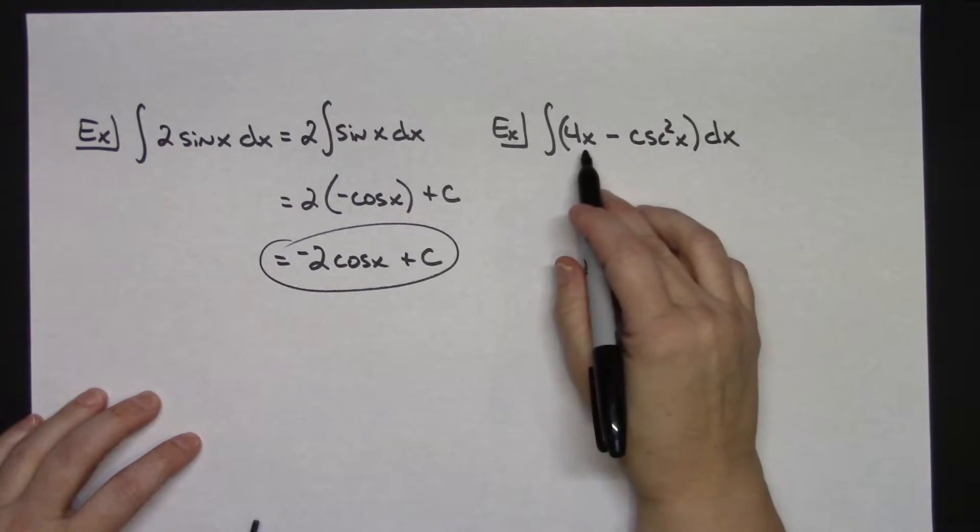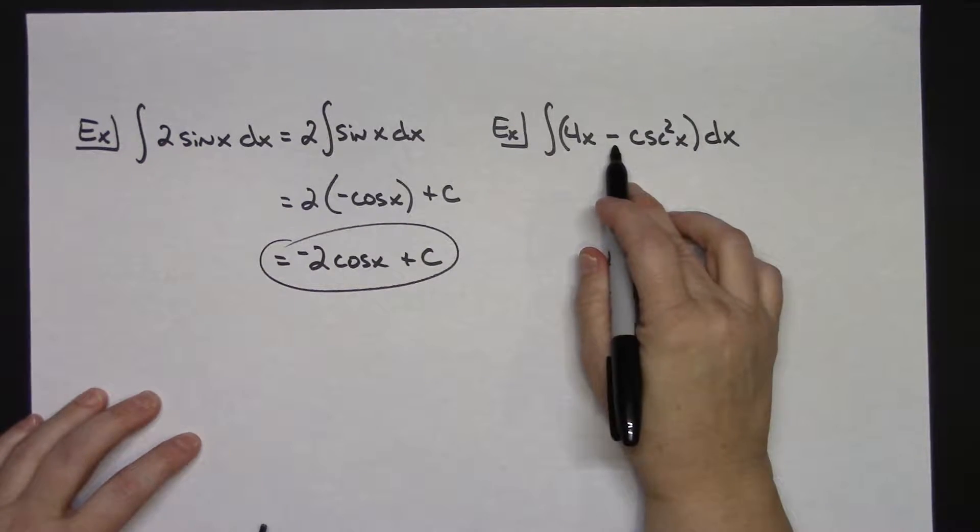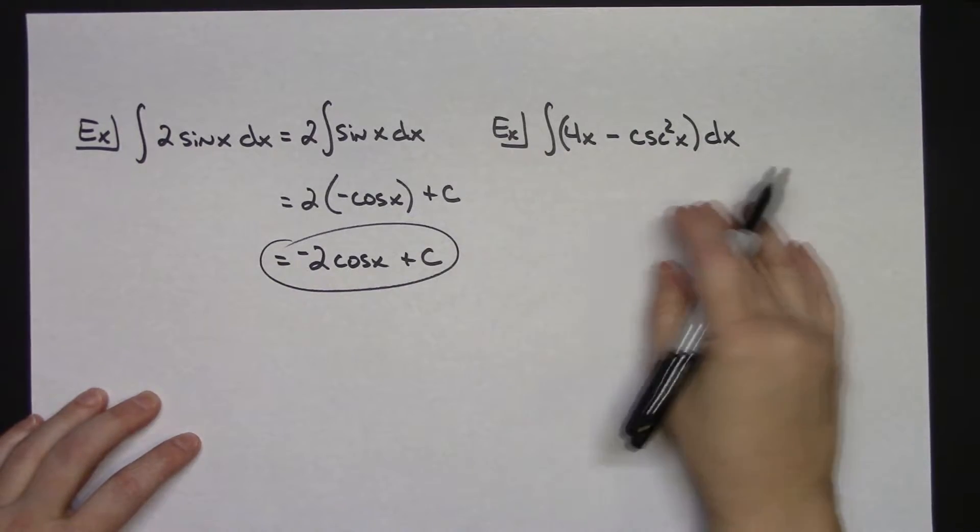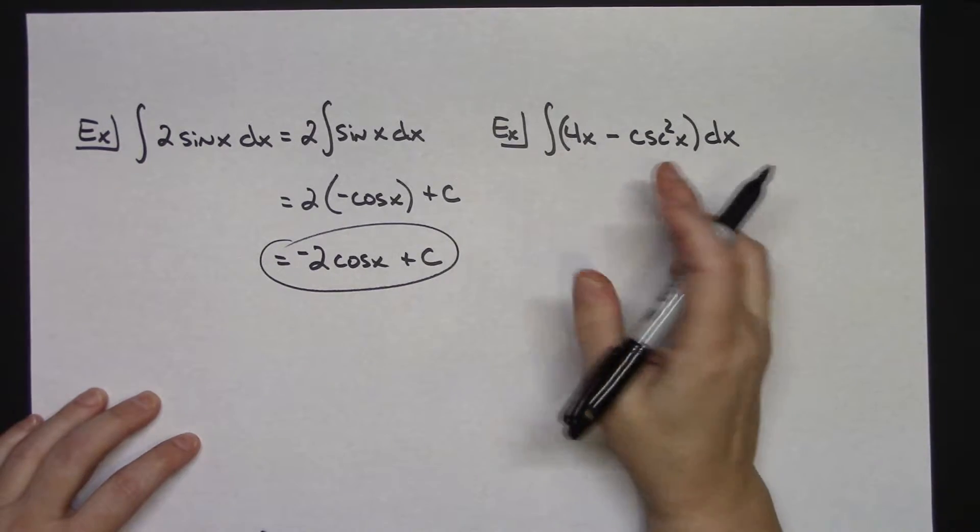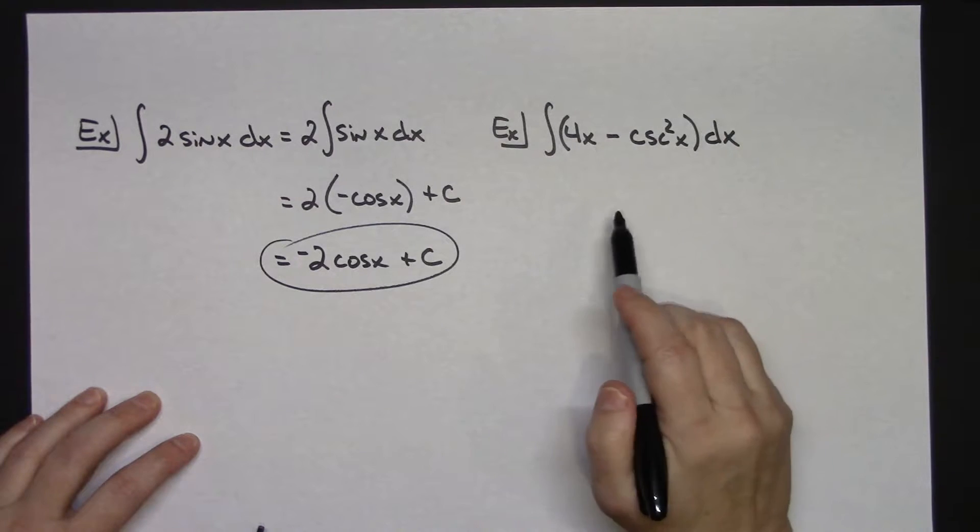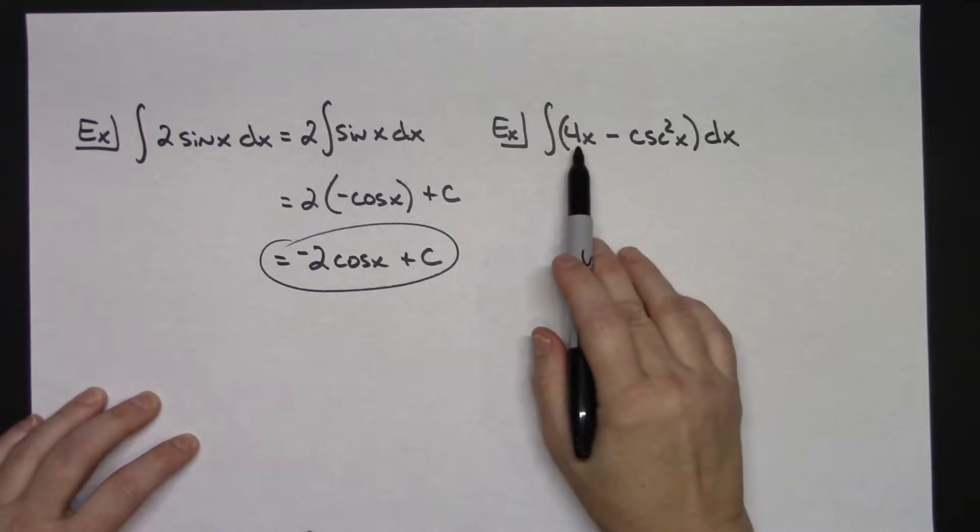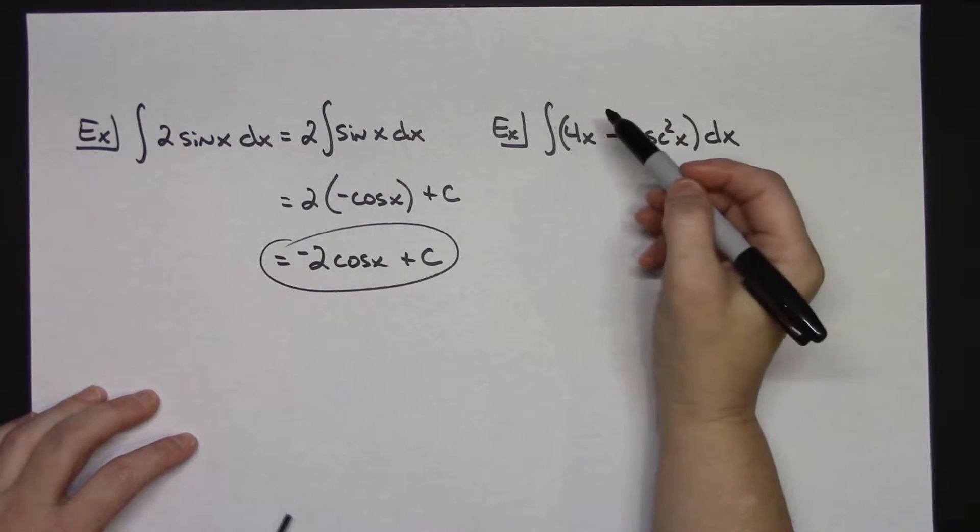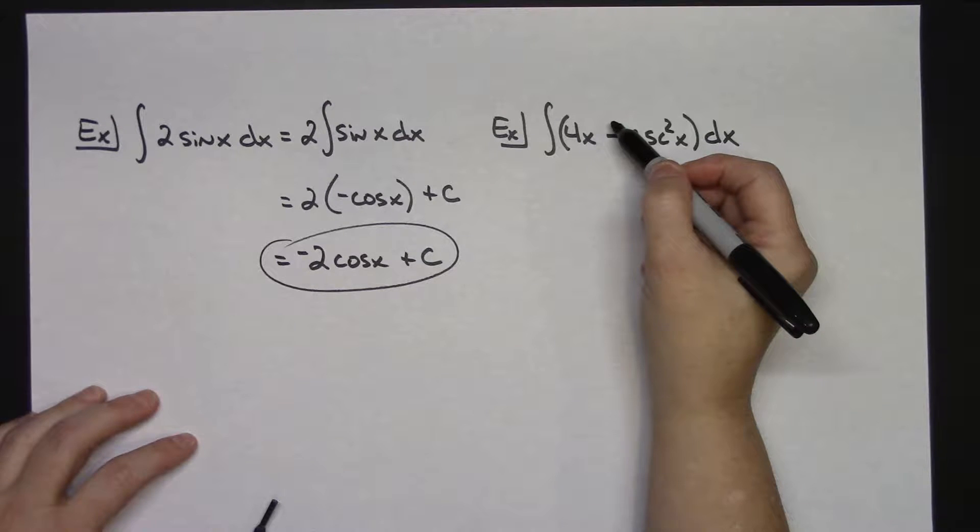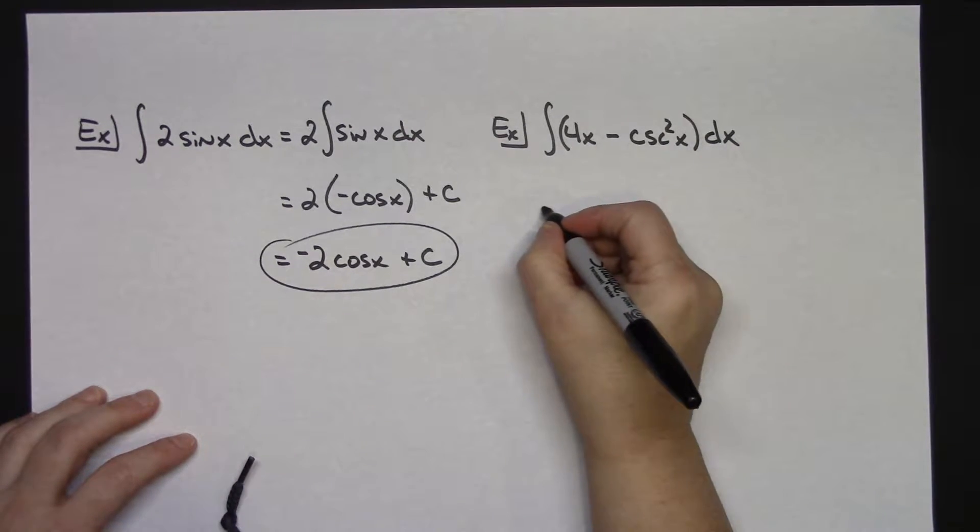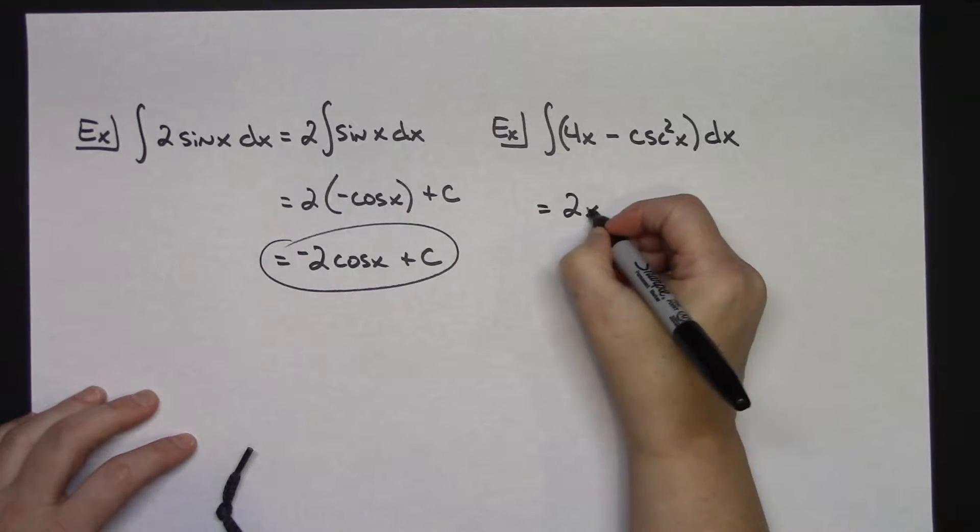Here on the second example, I've got two things being subtracted. I can integrate them separately - I could write them separately, or I can just understand that's a legal move. I can integrate this one, I can integrate this one, and we're good to go. So if I integrate this 4x, I'm going to use power rule. There's a little 1 there, so I'll add 1, get a 2. And then 4 divided by 2 is going to give me a 2, so I will have 2x squared.